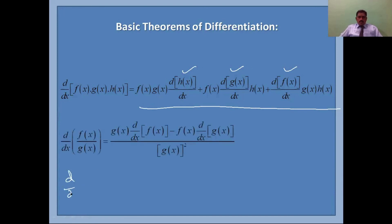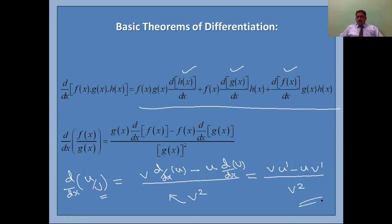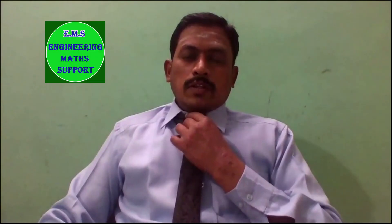The quotient (division) rule for u/v: the denominator squared goes in the denominator. In the numerator, keep v and differentiate u, then subtract u times the derivative of v. So d/dx of (u/v) equals (v·u′ − u·v′) divided by v². These are all the formulas you need to remember to solve problems.